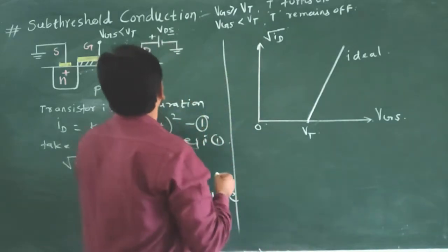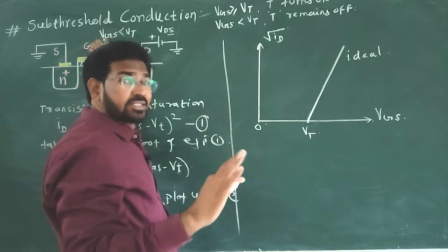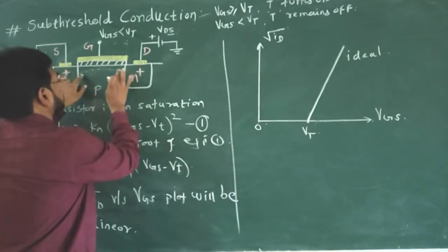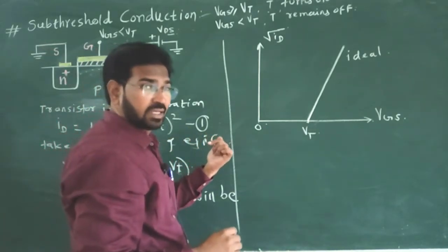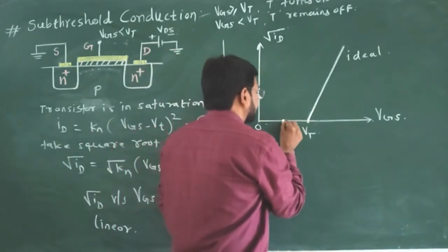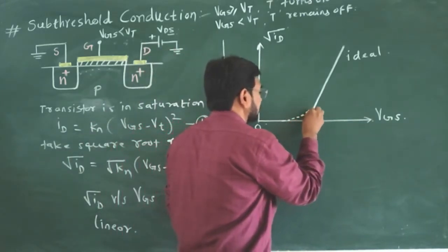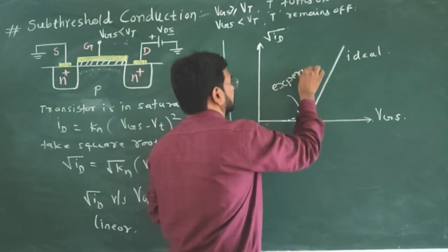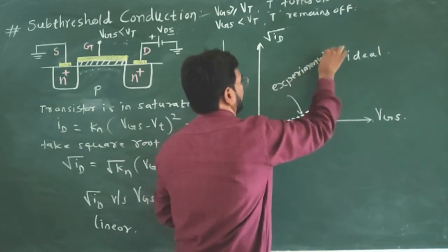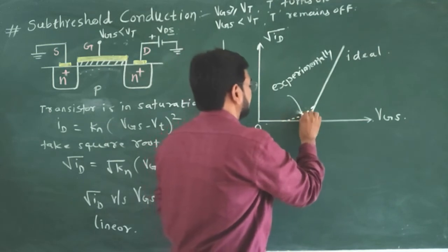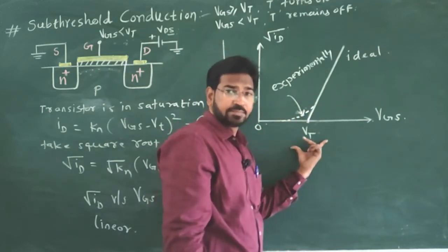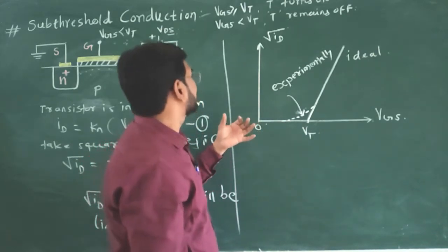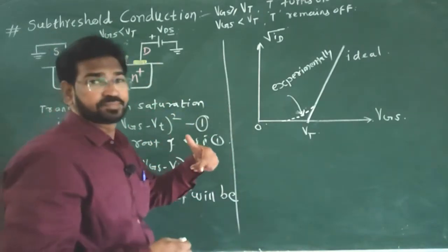But it does not happen experimentally. What happens when gate voltage is not yet reached to equal to Vt? Before that some small amount of current flows from drain to source and this is experimental graph. Experimentally this happens. Before the threshold voltage a small amount of drain current exists there and this is called as sub-threshold conduction.